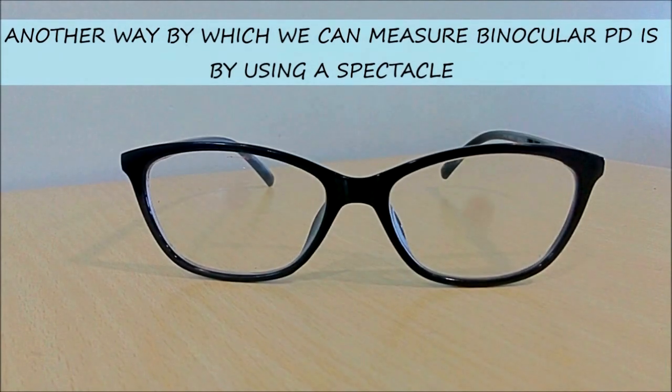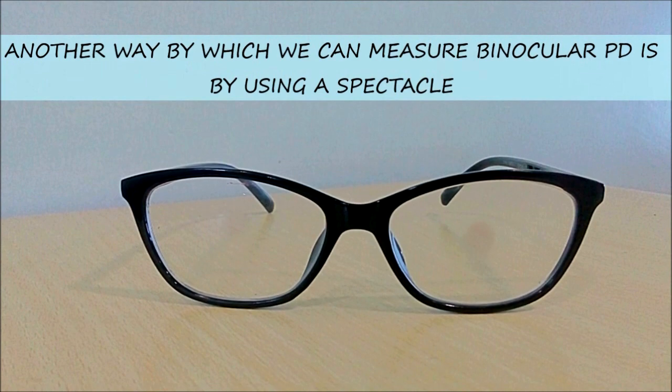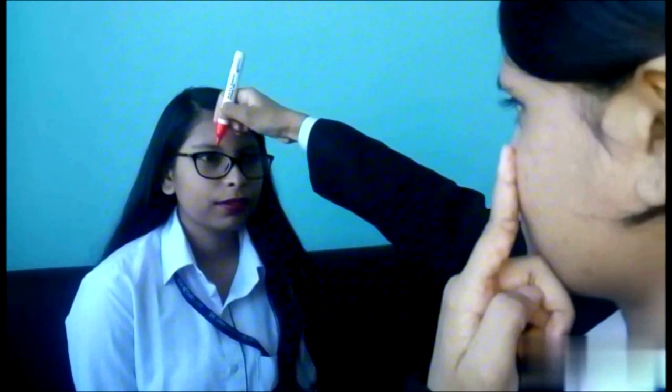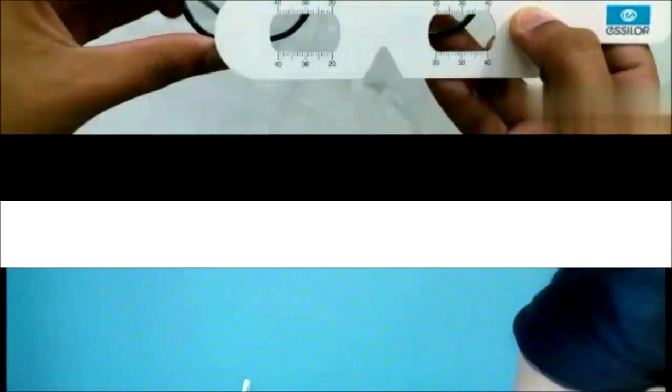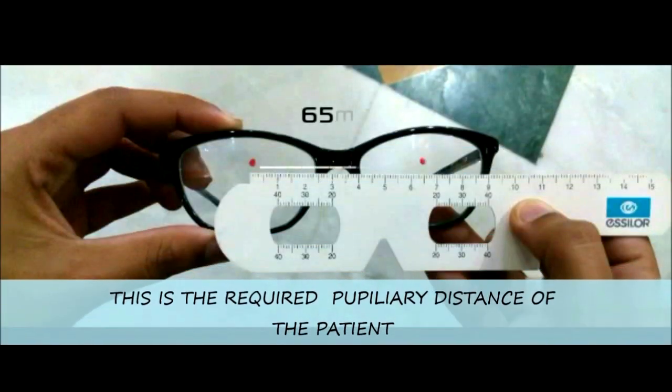Another way to measure binocular PD is by using a spectacle. The patient is asked to wear a spectacle, and the examiner, closing his or her right eye, asks the patient to look into his or her left eye. With the help of a marker, the examiner marks the center of the pupil of the patient's right eye. The examiner then closes the left eye and asks the patient to look into the open right eye, marking the center of the pupil of the patient's left eye. The spectacle is removed and the distance between the two points in millimeters is the required pupillary distance.